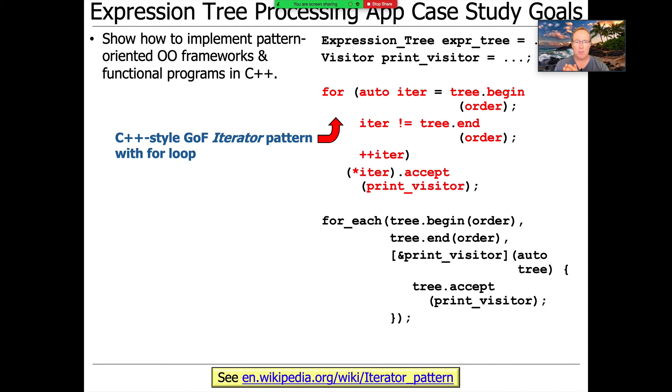So here's a very simple example of this. This is showing kind of the C++ Gang of Four iterator pattern using a for loop. And in this particular case, we're just using a for loop where we're going to get ourselves an iterator to the beginning of an expression tree.